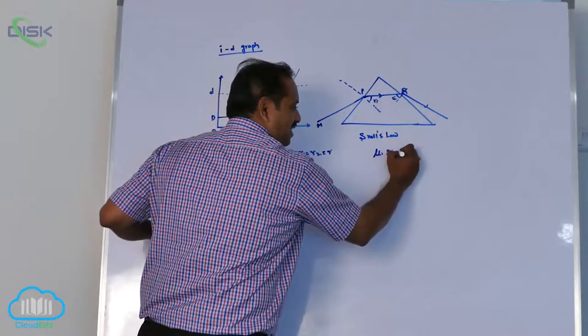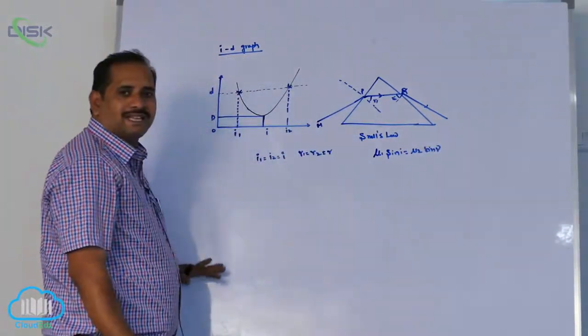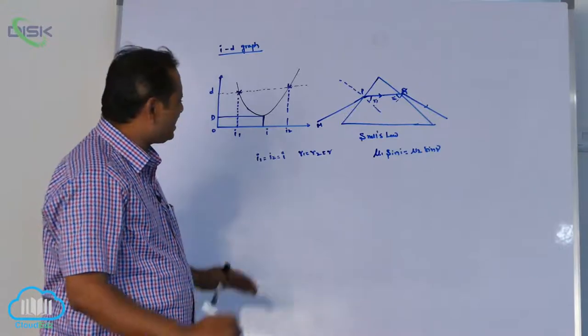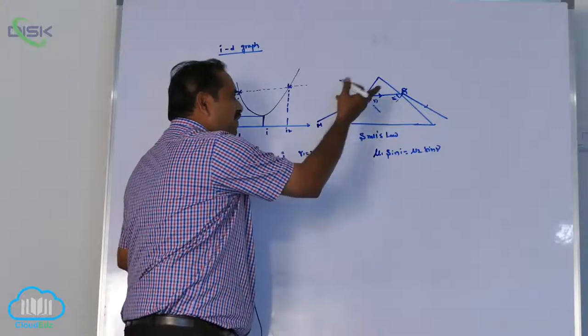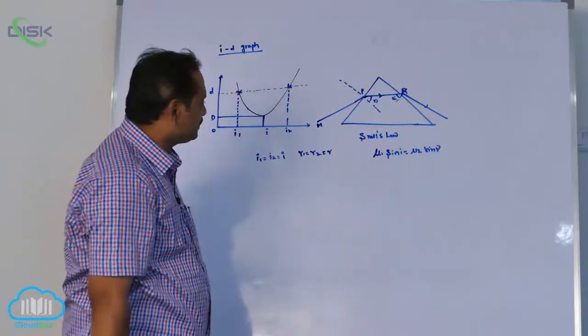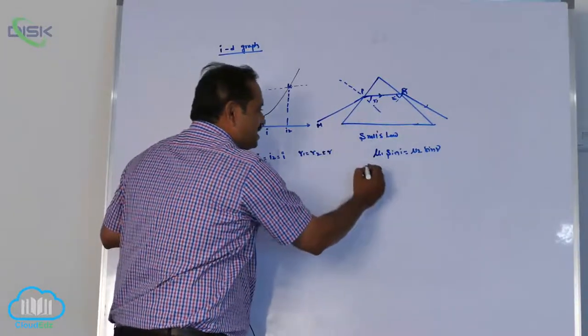Now, mu1 sin i equal to mu2 sin r. It is applicable anywhere for one refracting surface. Apply it to either first or second, your choice. First I am thinking like this.